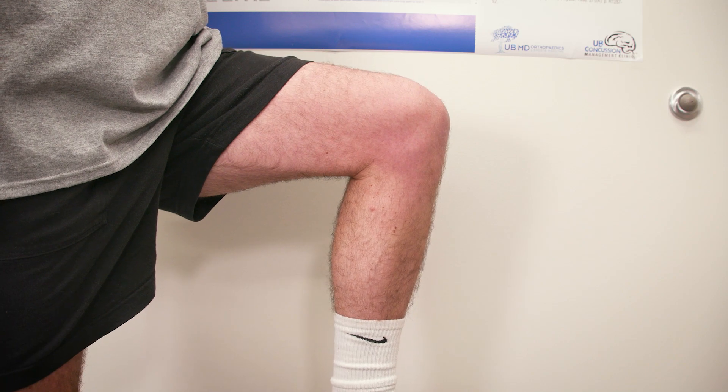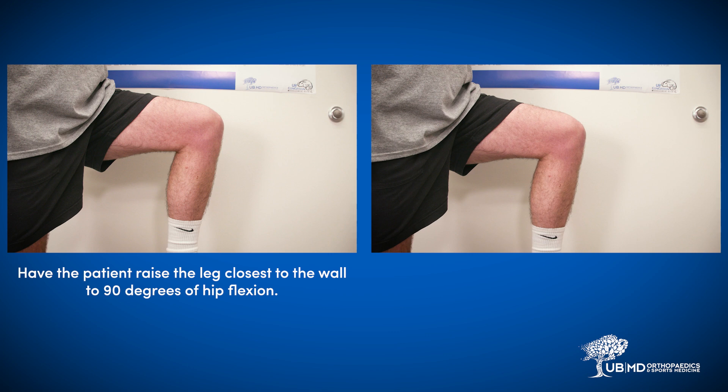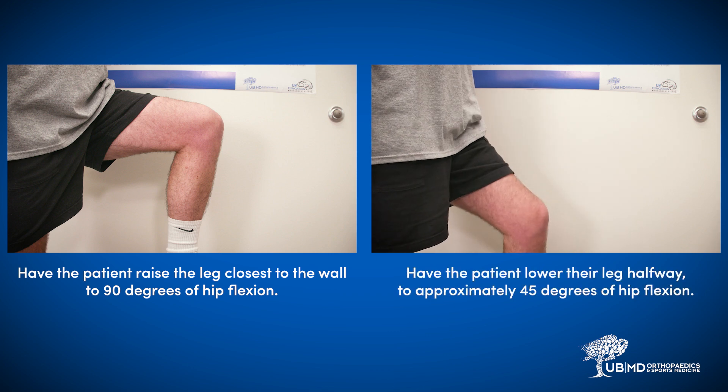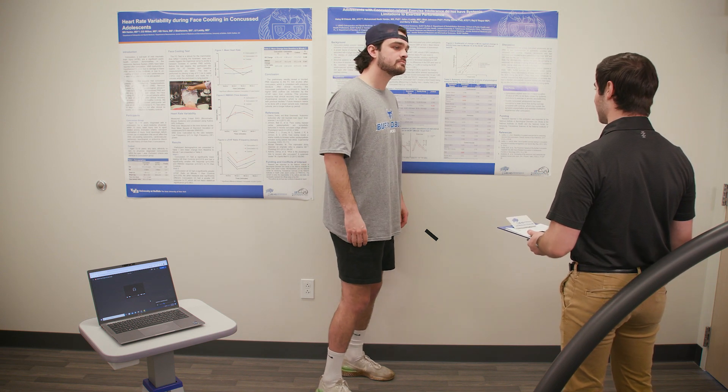Hip flexion can be estimated by having the patient stand next to the wall and asking them to raise the leg closest to the wall to 90 degrees of hip flexion. Then ask the patient to lower their leg halfway — this is approximately 45 degrees of hip flexion, which is appropriate for the BCMT. The patient should stand parallel to the wall with the tape clearly visible beside them during the test. Once the tape is adhered, baseline measurements have been collected, and the patient is oriented to test procedures, the exam can begin.